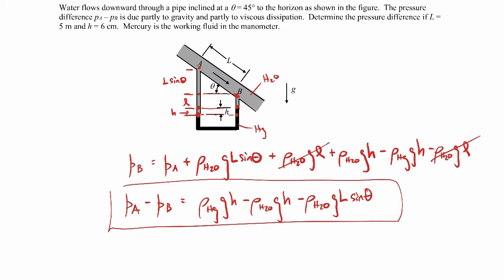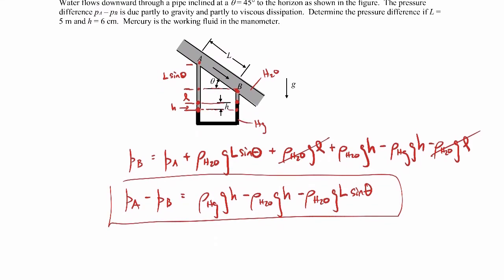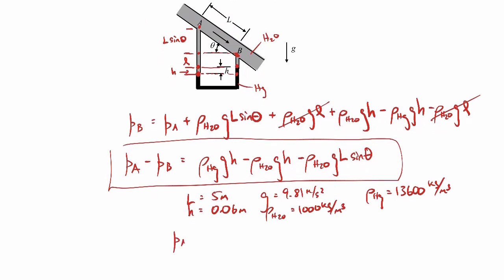We're given some information about the values. L is 5 meters, H is 6 centimeters or 0.06 meters. Gravity is 9.81 meters per second squared. The density of water is 1,000 kilograms per cubic meter, and the density of mercury is 13,600 kilograms per cubic meter. So when you work out the numbers, PA minus PB comes out to be minus 27.3 kilopascals.